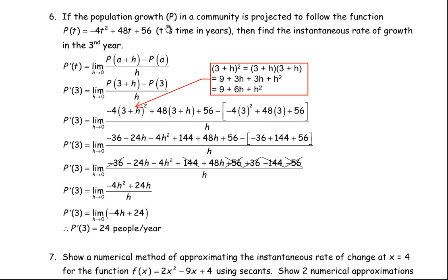In question number 6, using the same population model P(T) equals negative 4T squared plus 48T plus 56, where P is people and T is time in years, we're asked to find the instantaneous rate of growth in the third year — not between years, but the growth rate at that exact point in time. This is really a derivative calculation. P prime equals the limit as h tends toward 0 of P(a+h) minus P(a) over h, where a equals 3.